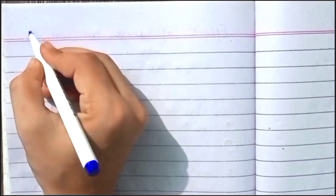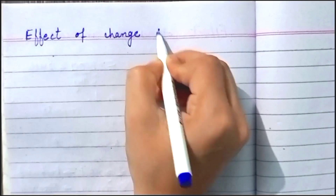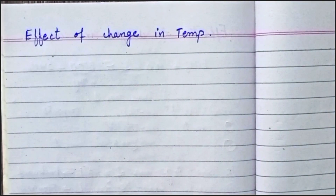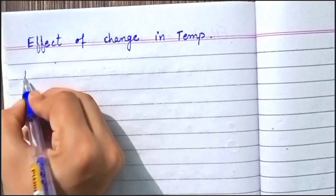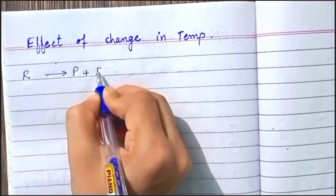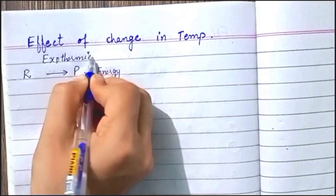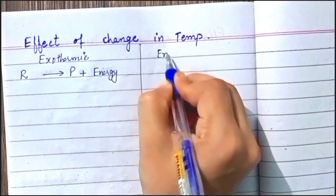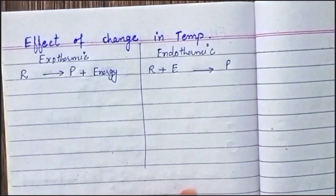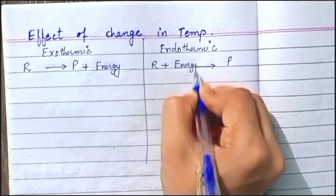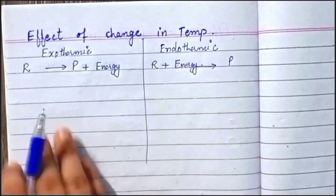The third type of stress is the effect of change in temperature. Chemical reactions are either exothermic or endothermic. In an exothermic reaction, when reactants convert to products, energy is released. In an endothermic reaction, energy is absorbed from the surroundings as products are formed. For exothermic reactions, energy can be considered on the product side, while for endothermic reactions, energy is on the reactant side.